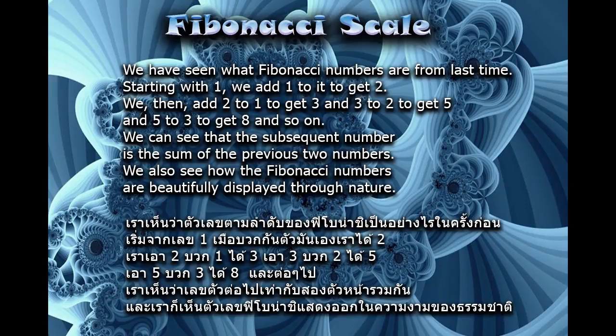We have seen what Fibonacci numbers are from last time. Starting with 1, we add 1 to it to get 2. We then add 2 to 1 to get 3, and 3 to 2 to get 5, and 5 to 3 to get 8, and so on. We can see that the subsequent number is the sum of the previous two numbers. We also see how the Fibonacci numbers are beautifully displayed through nature.